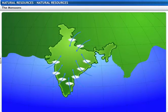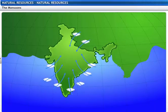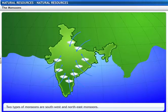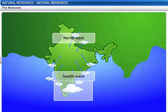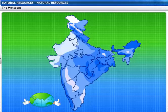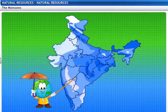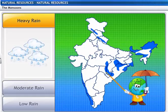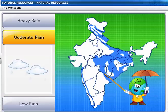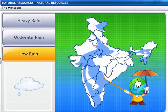In many parts of India, rain is brought by seasonal winds called monsoons. There are two types of monsoons: southwest and northeast. Southwest monsoons bring the maximum amount of rainfall for India. This map shows the rainfall pattern of India. These regions in India receive high rainfall and show maximum biodiversity. These regions have moderate rainfall, while these areas receive low rainfall and show minimum biodiversity.